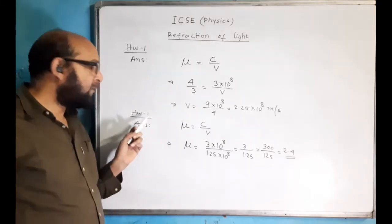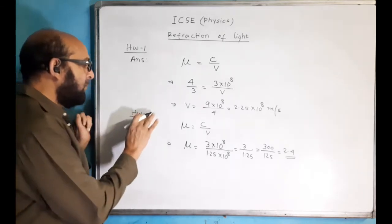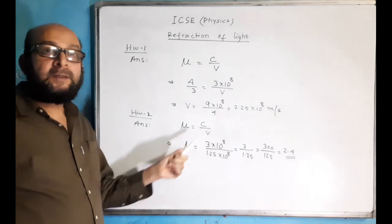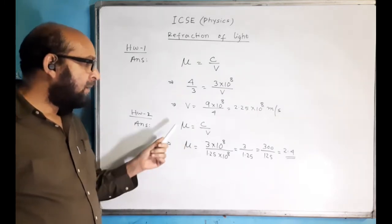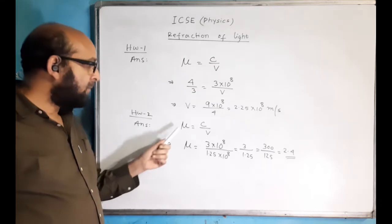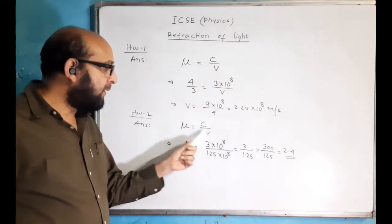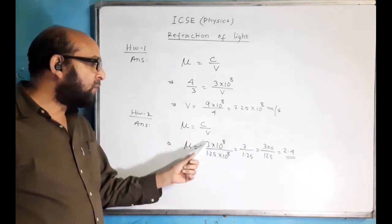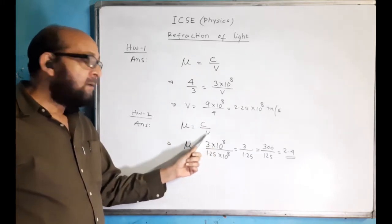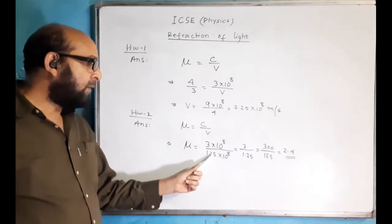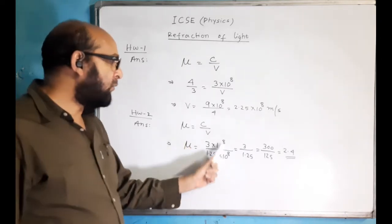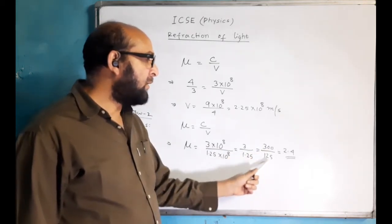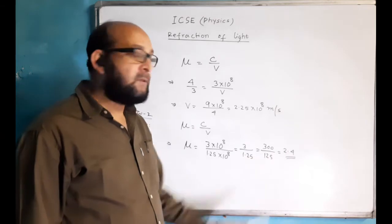Let's see the solution for the second question. The formula is the same: mu is equal to c by v. There was a mistake in that question in the last part. We have to find the refractive index of that medium, so mu = c upon v. The value of c is as usual 3×10⁸, and the speed of light in that medium is given as 1.25×10⁸. These two cancel, giving 3 upon 1.25. Remove the zeros — 300 divided by 125 — the answer is 2.4.